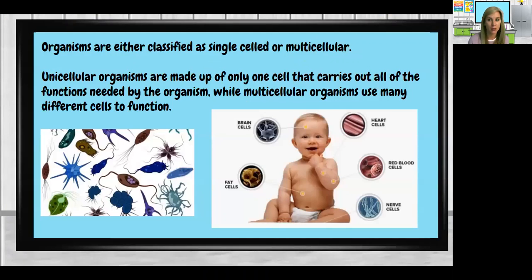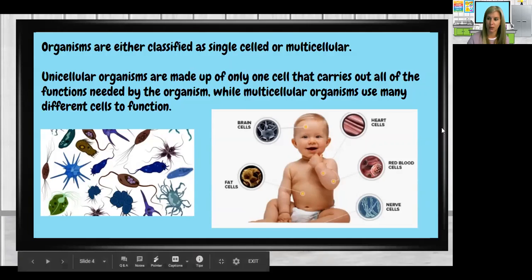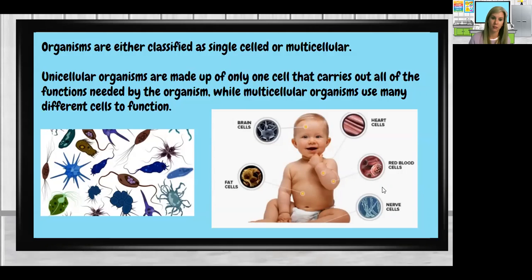Organisms are either single-celled — that's what unicellular means, they're made up of one single cell — and that one cell provides and does a complete life cycle all on its own. It doesn't need any other cells. Then there are multicellular organisms, which include all animals, people, and plants. They're made up of many cells — that's what 'multi' means. Unicellular organisms carry out all functions needed within one cell, while multicellular organisms use many different cells to function.